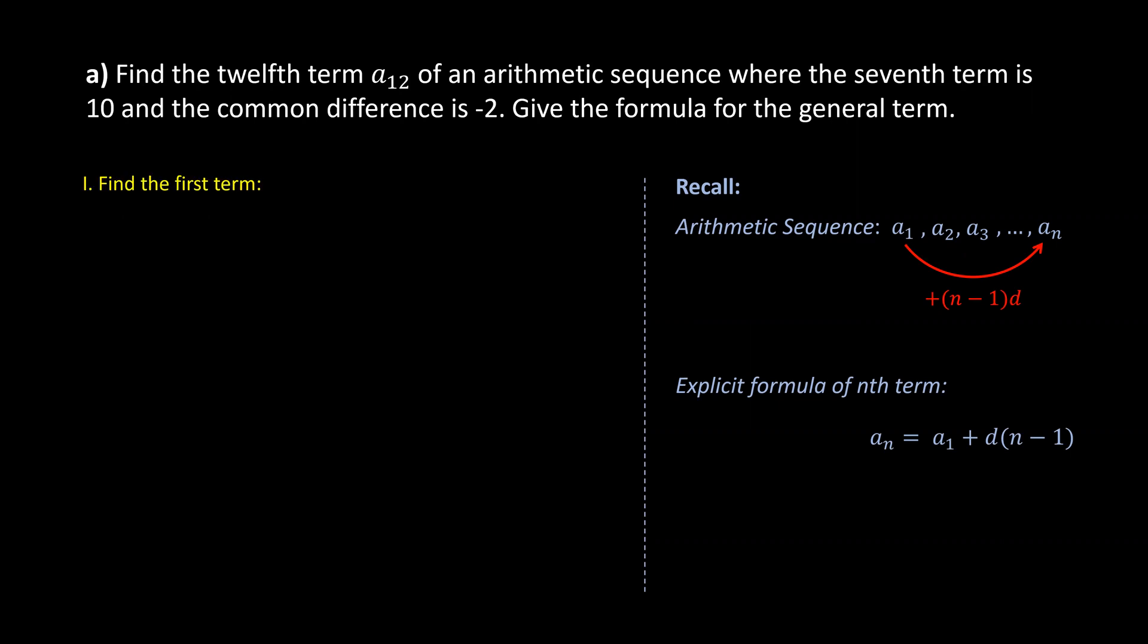Now to answer this problem first, we need to find the first term. Given the explicit formula in general form and the fact that the seventh term is equal to 10 and the common difference is negative 2, we can substitute and we'll get 10 equals a1 minus 2 times 7 minus 1. We simplify the right-hand side and we solve for a1 to be 22.